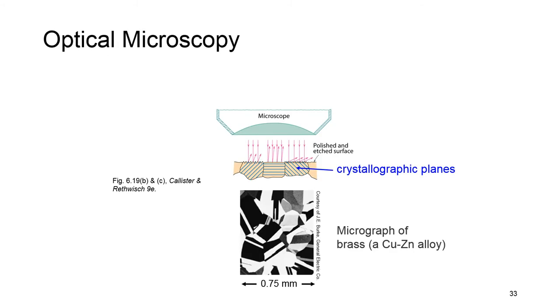Optical microscopy is a useful method that can magnify grains and grain boundaries up to 2,000 times. In order to observe the microstructure and grains of materials, what we do is a combination of polishing and etching. Polishing removes surface features like scratches, and etching changes reflectance, and it depends, of course, on crystal orientation.